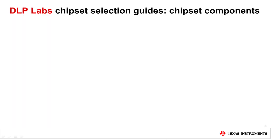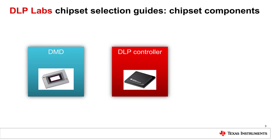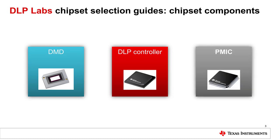A display chipset consists of three components: a digital micromirror device, or DMD, a DLP controller, and a dedicated power management IC, or PMIC. This selection guide provides helpful references for which combinations of components work together in a given chipset.